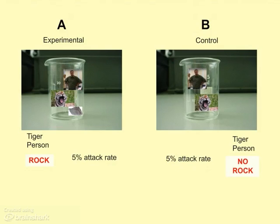Advertisers take advantage of people's lack of understanding of a controlled experiment all the time by only showing you the experimental results. Lots of weight loss pill commercials will tell you how much weight you can lose by taking the pill, but what they won't show you — or they'll hide — is how much weight you can lose by doing the same things the people who took the pill did, but without taking the pill. So don't let the advertisers take advantage of your lack of understanding of a control group. Don't let them take advantage of you.